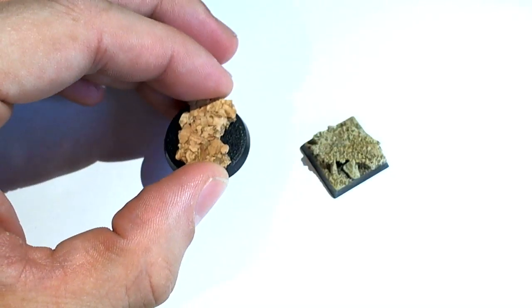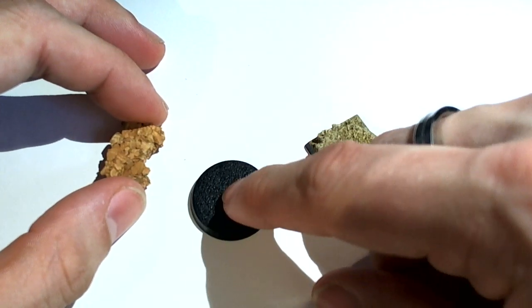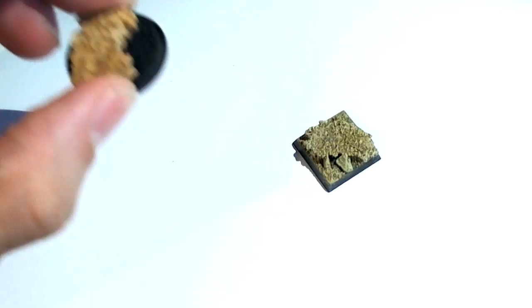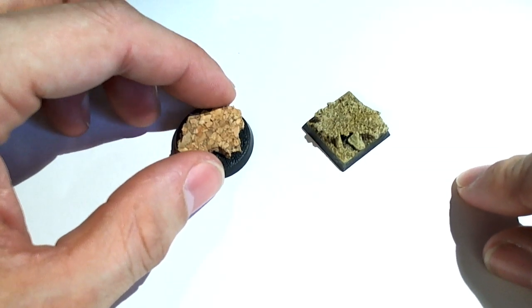You're going to take your cork and your base, you're going to apply the super glue to the base, put the cork on. I've prepped one. There we go.